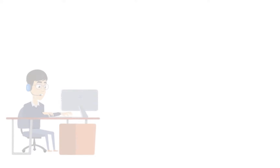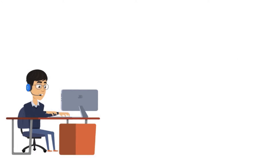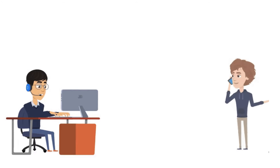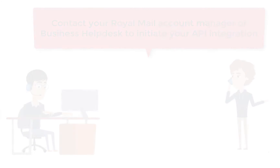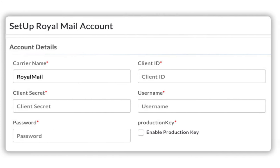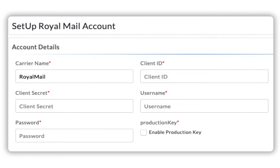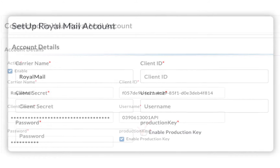After the process is completed, please contact your Royal Mail account manager or business help desk to initiate your API integration. Once you receive the account details, edit them in the app. Ensure that you enable the production key and save the details.